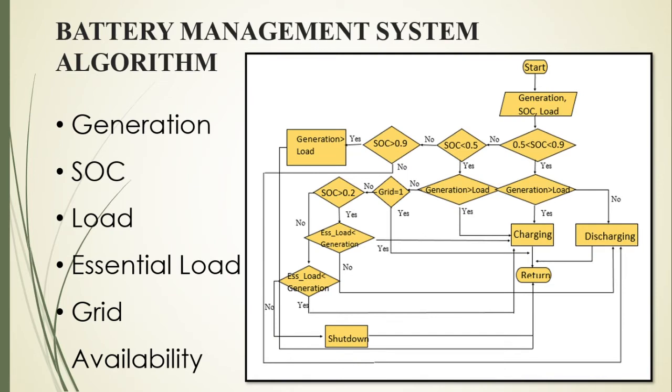This is the developed algorithm to identify whether the battery should be charged or discharged. Here, decisions are taken by considering the inputs I mentioned before. According to the algorithm, the battery will be charged only when excess power generation occurs in the microgrid. If the battery is not sufficient and generation is lower, then only grid power is consumed. So this system consumes a lesser amount of grid power.